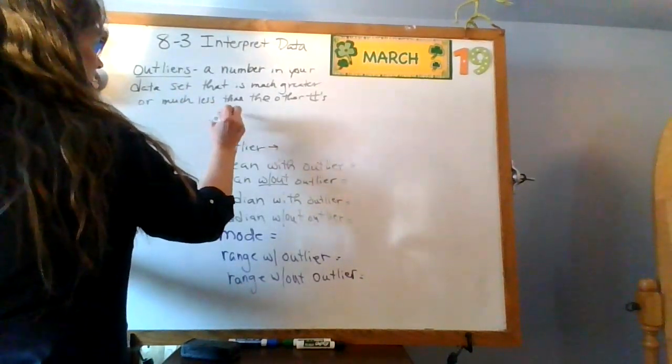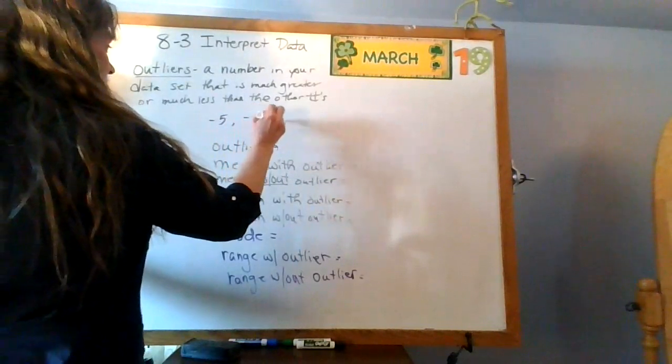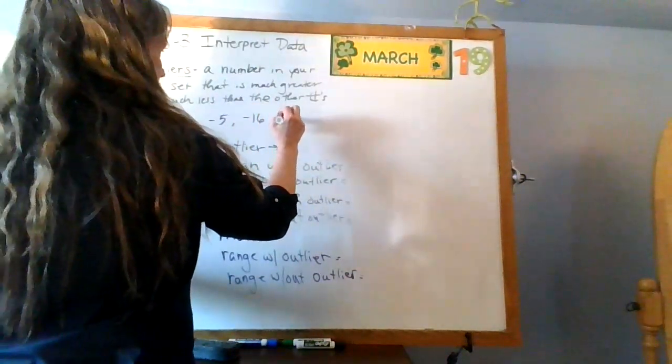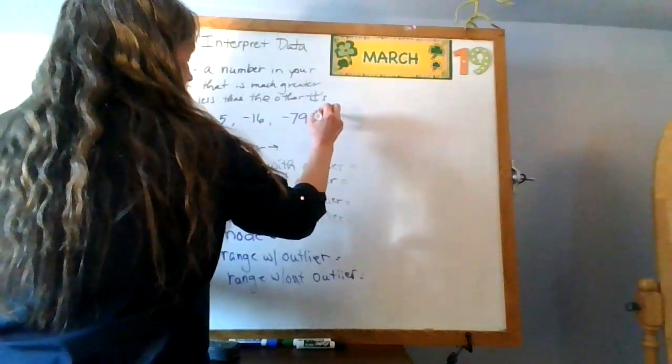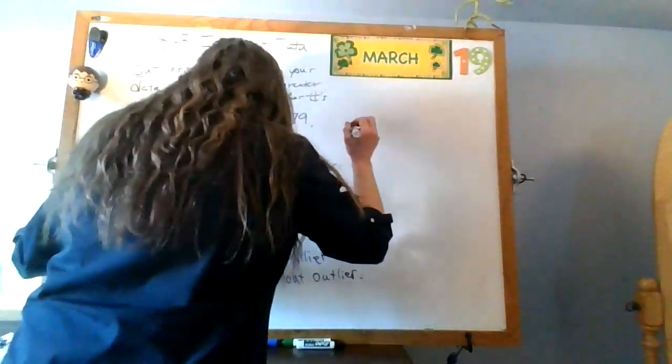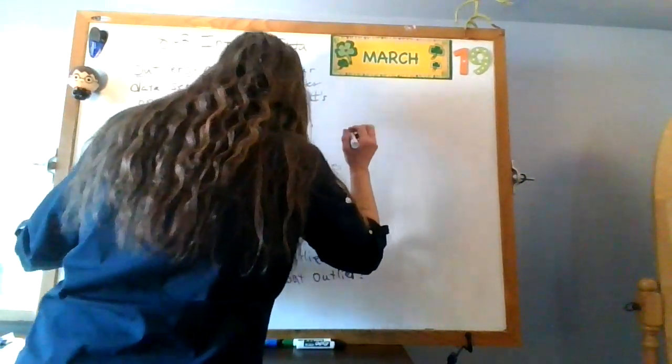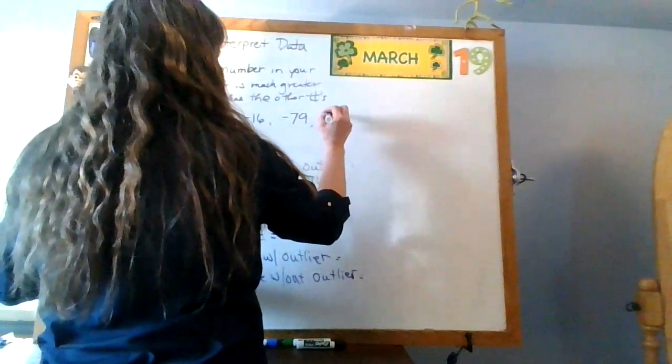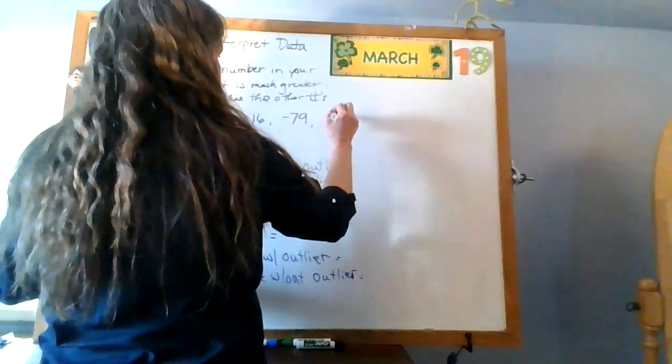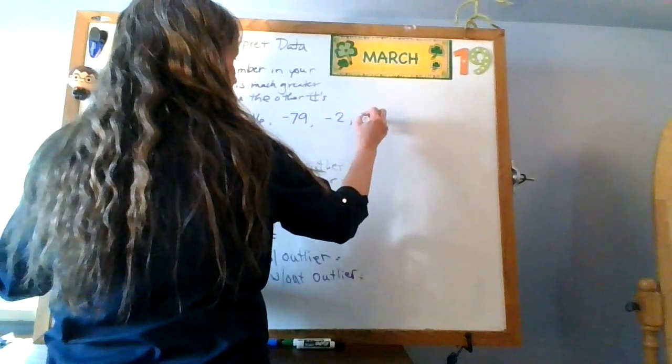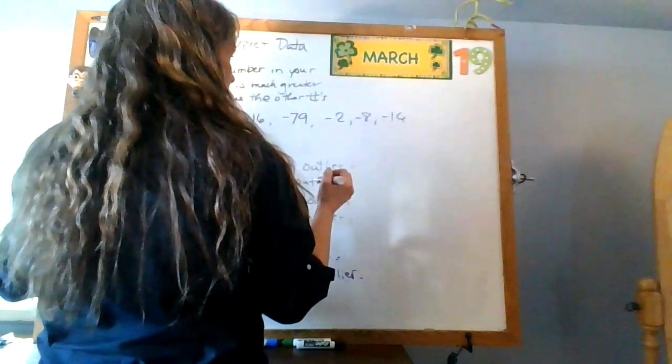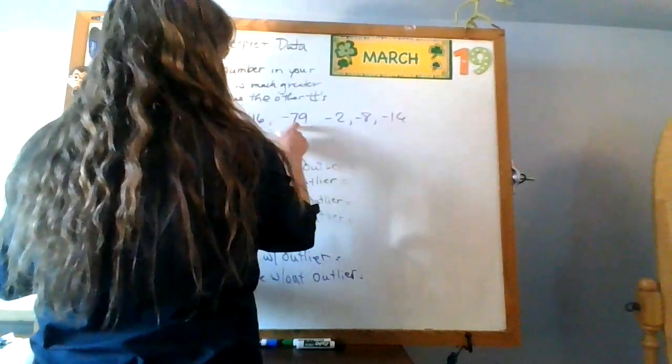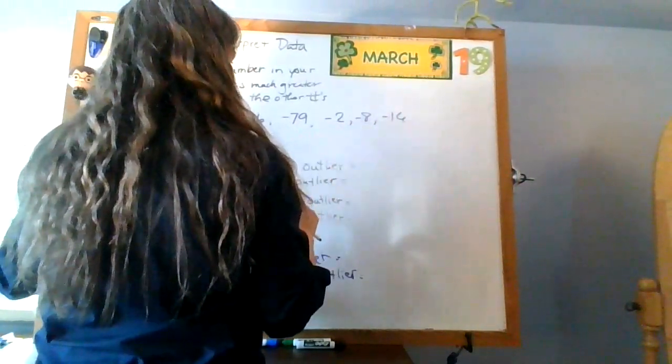How about we do negative 5, negative 16, negative 79, negative 2, negative 8, negative, sorry, negative 8, negative 16. 15, 5, 6, good enough for me. All right.